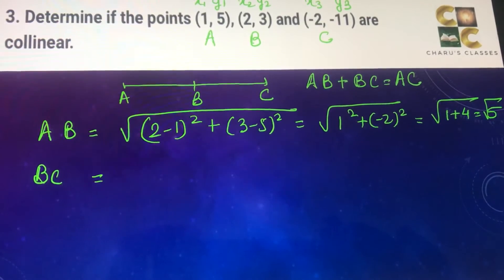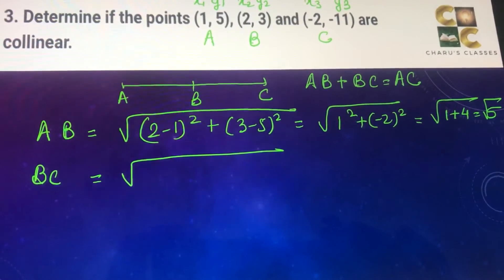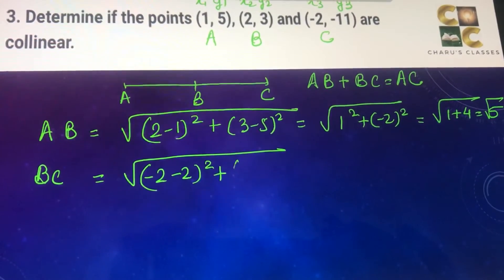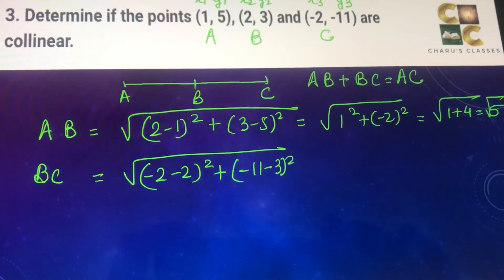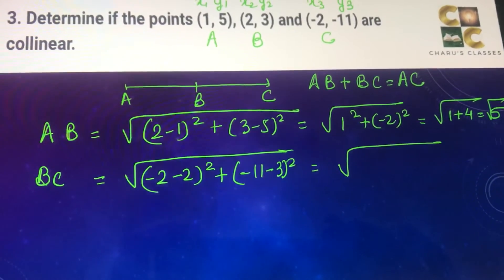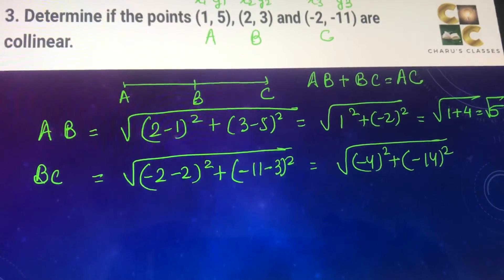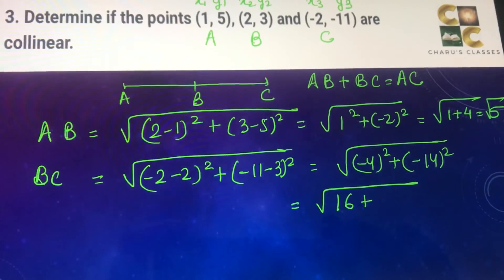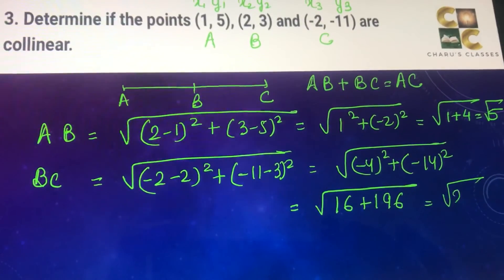Let's find BC now. BC is square root of (x3 - x2)², that is (-2 - 2)² plus (y3 - y2)², that is (-11 - 3)². This is square root of (-4)² plus (-14)². Or we can say square root of 16 plus 196, which is root 212.